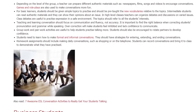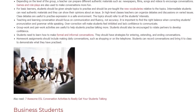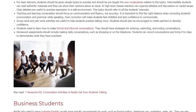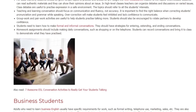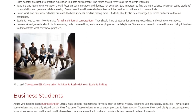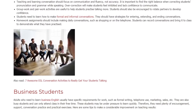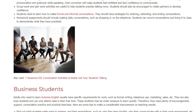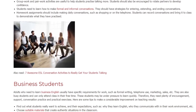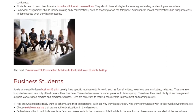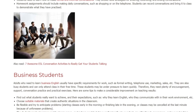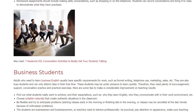It is important to find the right balance when correcting students' pronunciation and grammar while speaking. Overcorrection will make students feel inhibited and lack confidence to communicate. Group work and pair work activities are useful to help students practice talking more. Students should also be encouraged to rotate partners to develop confidence. Students need to learn how to make formal and informal conversations. They should have strategies for entering, extending, and ending conversations.